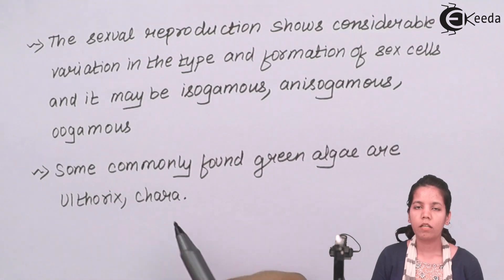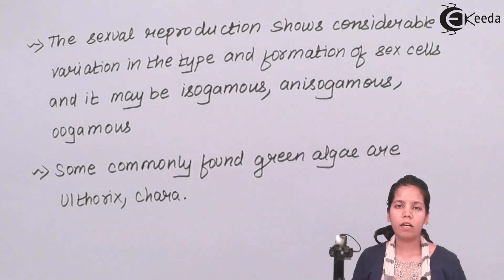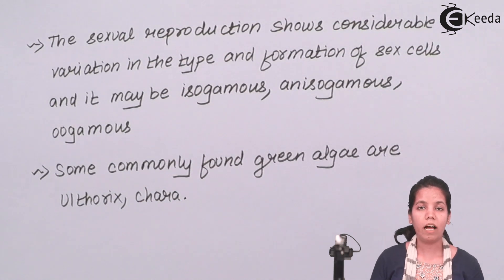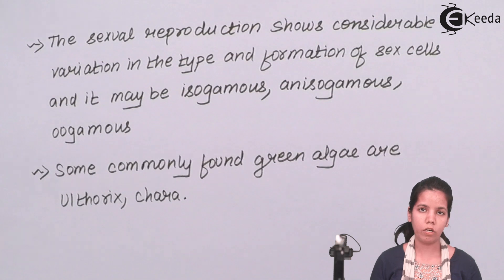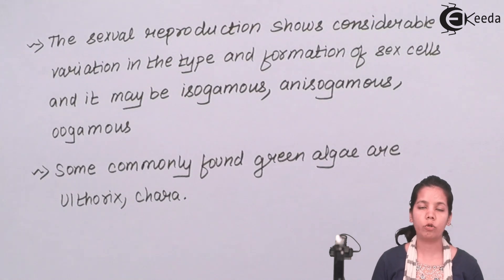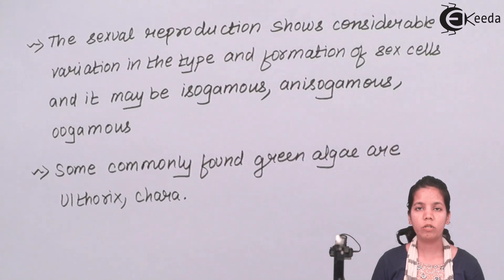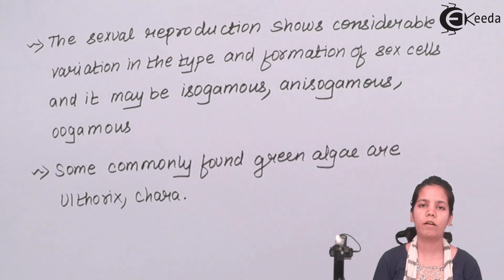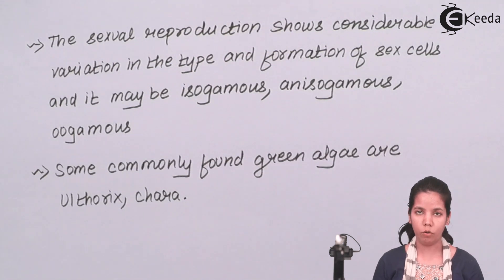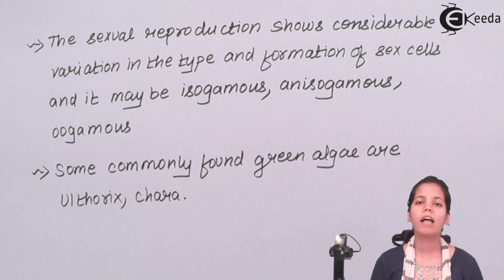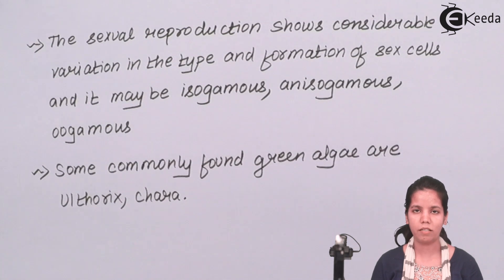Some commonly found green algae or Chlorophyceae available in the plant kingdom are Ulothrix and Chara. This Chlorophyceae kingdom is varied, and other forms include Chlamydomonas and Volvox. In this part of the chapter, we have studied Chlorophyceae — how it looks, its reproduction process, and its various examples. I hope you are clear with this concept. Thank you.